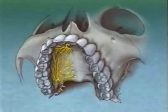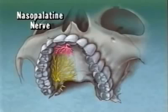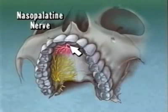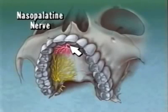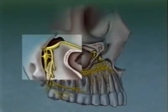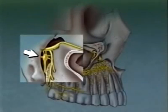One of these branches, the nasopalatine nerve, passes downward and forward on the nasal septum, enters the incisive canal, and reaches the oral cavity via the incisive foramen to provide sensation to the palatal mucosa of the premaxilla. A pharyngeal branch also exits the ganglion posteriorly to serve portions of the sphenoidal sinus and mucosa posterior to the auditory tube.